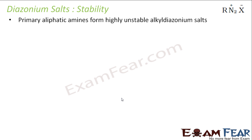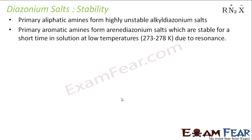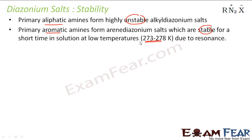Let's talk about the stability of diazonium salts. Primary aliphatic amines generally form highly unstable diazonium salts, but primary aromatic amines form stable ones. Aliphatic gives unstable, aromatic gives stable — why? Because of resonance. They are stable for a short time in solution at low temperature, around 0°C, but if you increase the temperature they decompose.